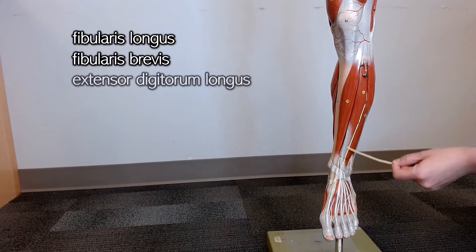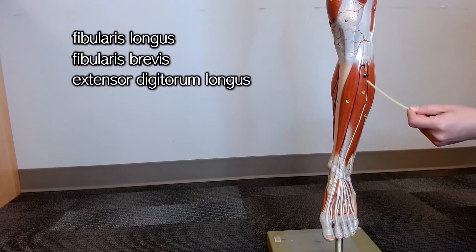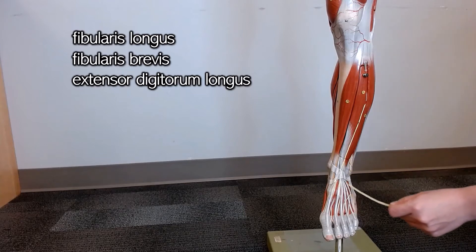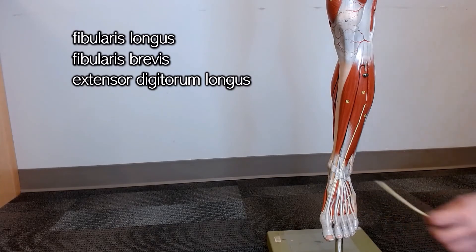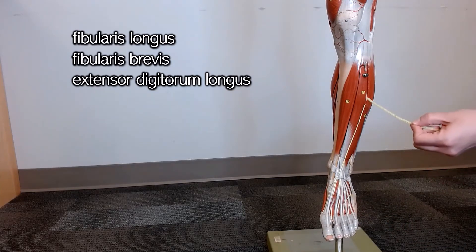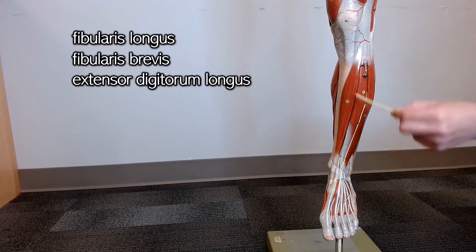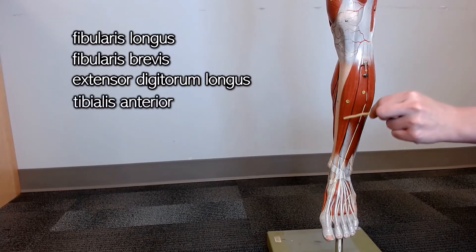The extensor digitorum longus, you can always tell it because if you follow it down, the tendons are running off to the toes. And next to the extensor digitorum longus is the tibialis anterior.